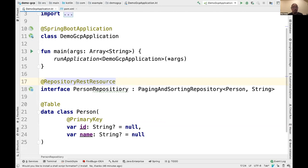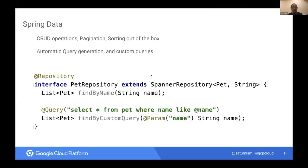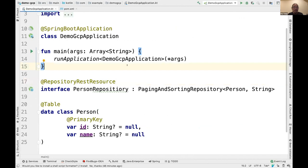We also integrate with all the finder methods, so we can infer find methods automatically. You can also annotate methods with a query annotation. And many other things within Spring Data like auditing and sending out events — if somebody inserts new information via Spanner through the repository, you can receive the event and act accordingly. And just like that, we have CRUD operations on our Spanner database.